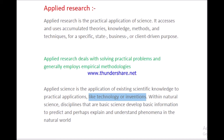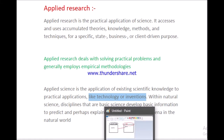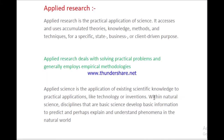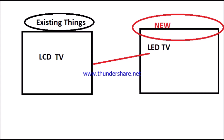You can see in this diagram a practical example of applied research. This is an LCD TV — an existing thing — which was practically converted into an LED TV, a new thing. LCD TV was already available and was modified into LED TV. This is a real-time example of applied science.